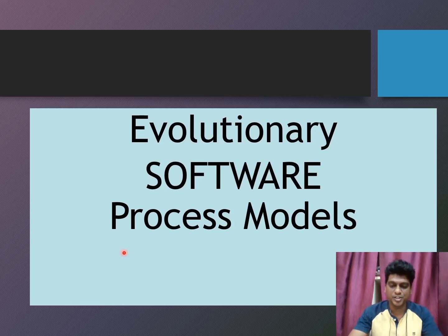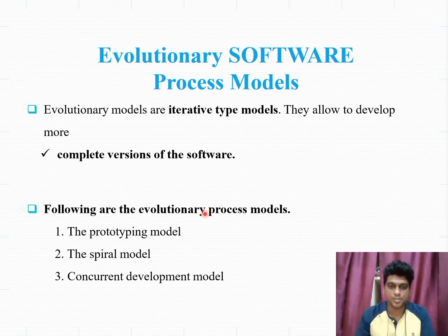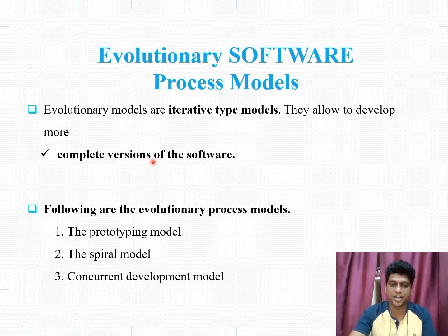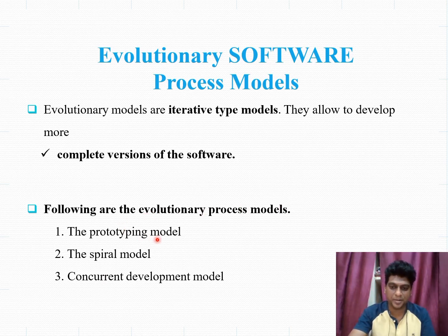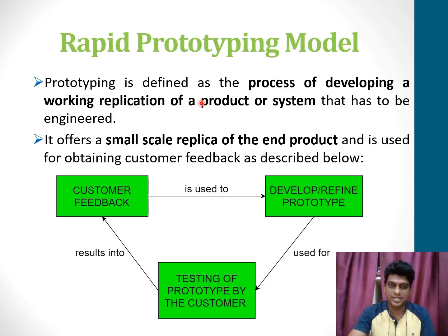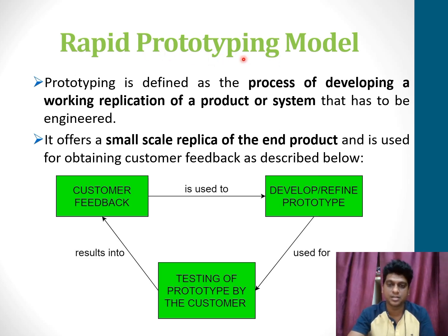Welcome to this video on the evolutionary software process model. This evolutionary process model is mainly based on the iteration-based method. It helps to create complex versions of software. The evolutionary process model has been classified into a prototyping model, spiral model, and a concurrent development model. The rapid prototyping model is often referred to as adaptive software development because, based on customer requirements, we can modify its versions.